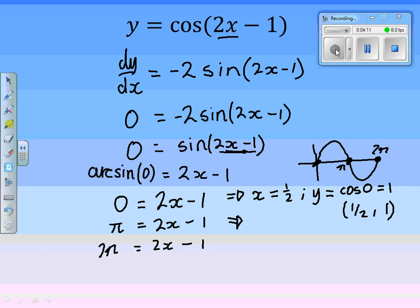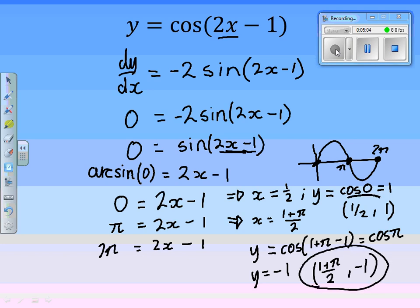The second stationary point here is when x is equal to 1 plus π divided by 2. And then our y coordinate there would be equal to cos of, well, 1 plus π over 2 multiplied by 2 is just 1 plus π, and then we're going to minus 1, so that's equal to cos of π. Can you tell me what cos of π is? Minus 1. So our second is (1 plus π over 2, minus 1). So there's two stationary points there.